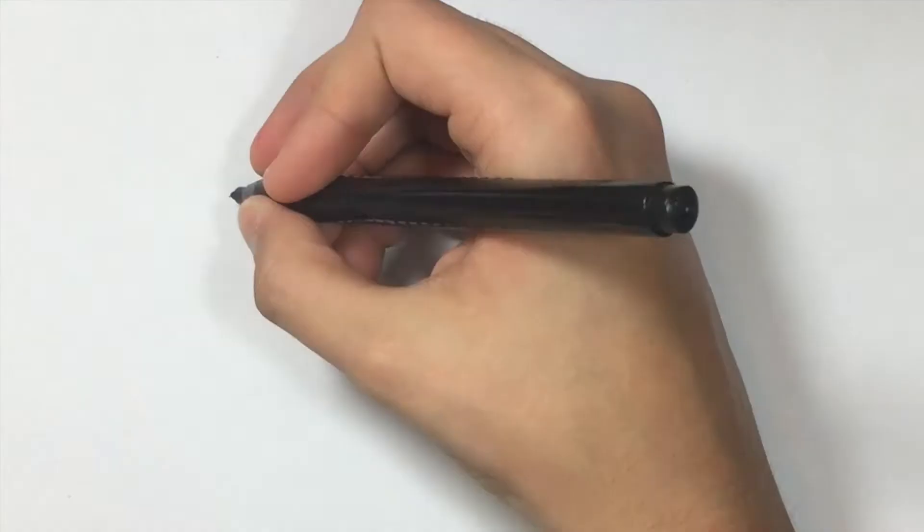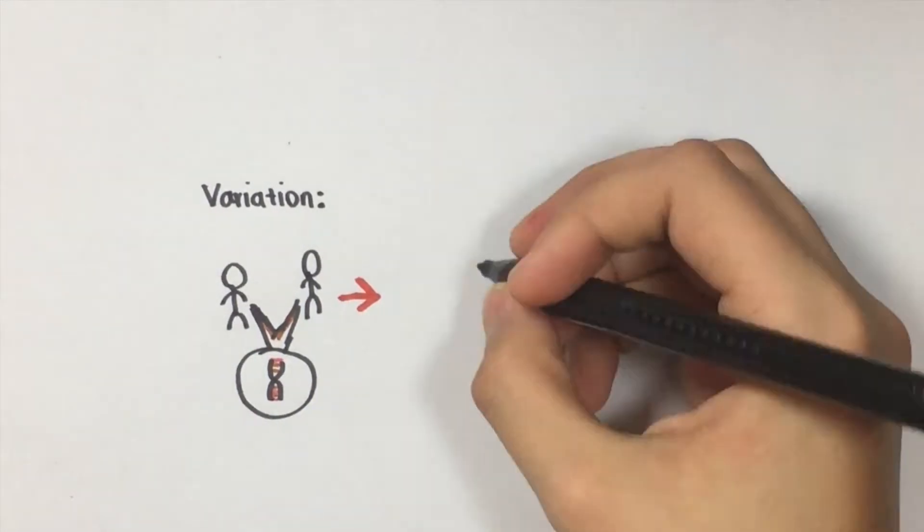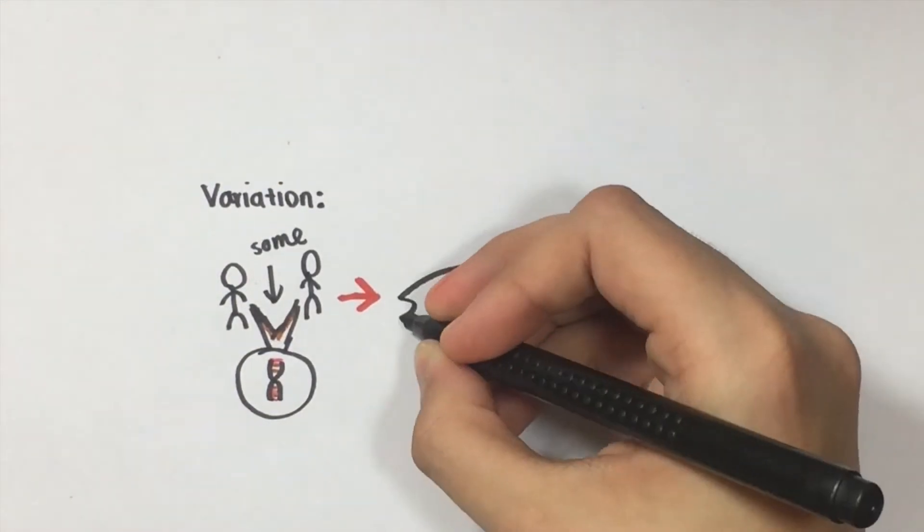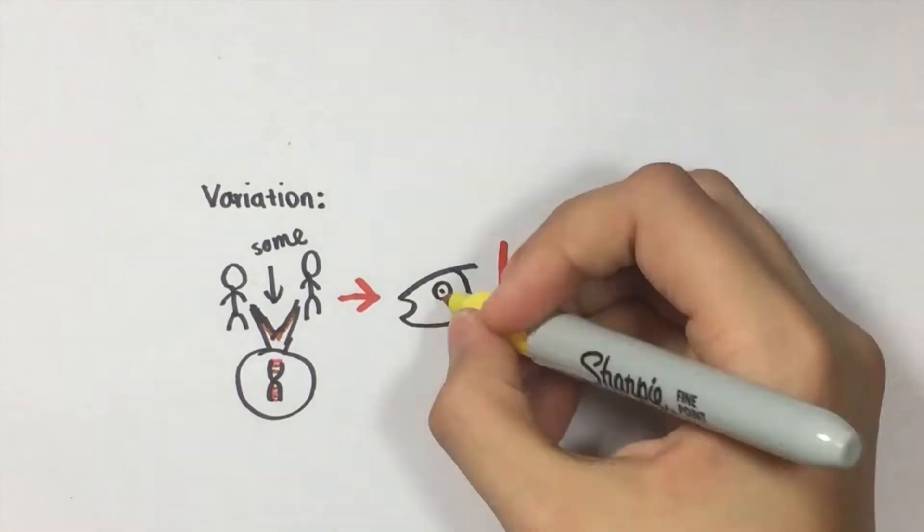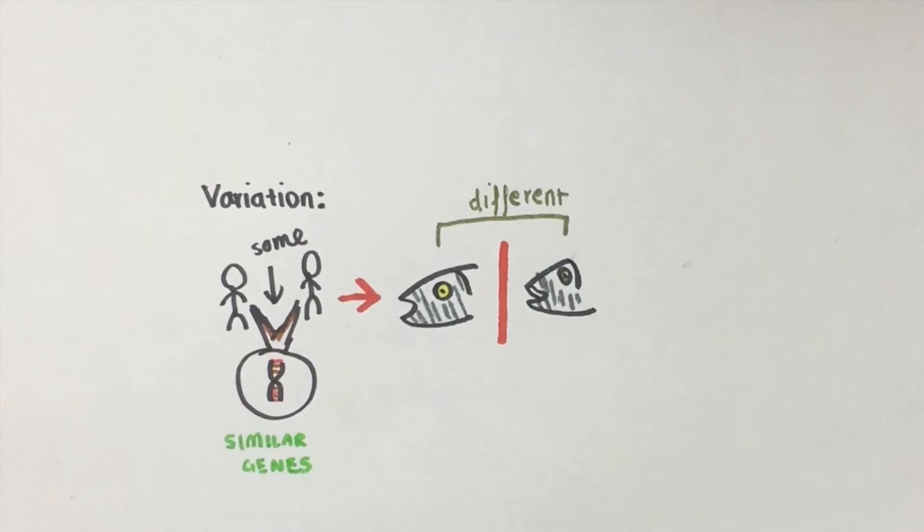First of all, what is variation and what causes it? Variations within a species are individuals who have similar genes but have slightly different phenotypic traits. Phenotype is basically an organism's observable traits like morphology and physiology.